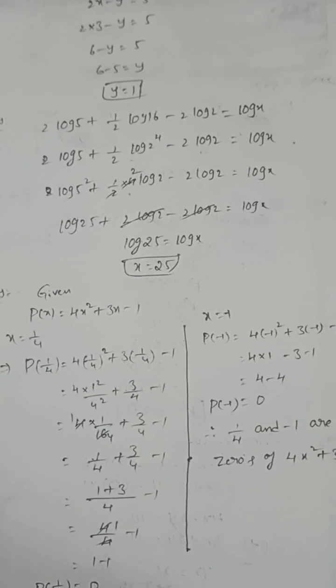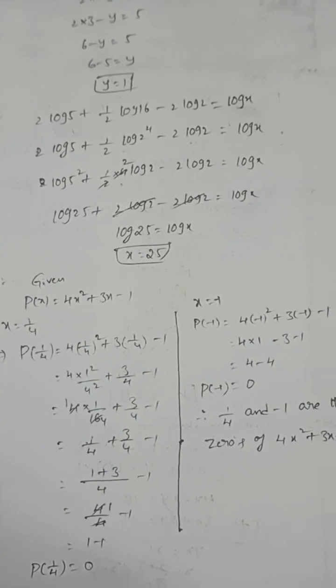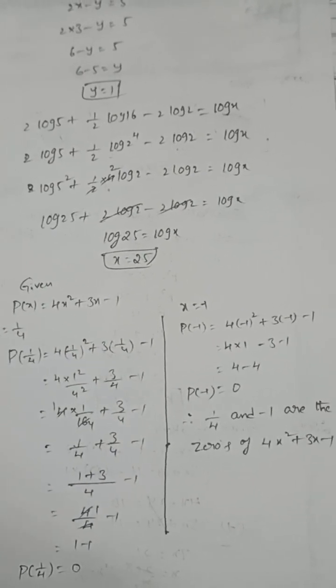Check whether 1/4 and -1 are the zeros of this polynomial. In the place of x put 1/4, the polynomial becomes 0. Put x = -1, the polynomial becomes 0.